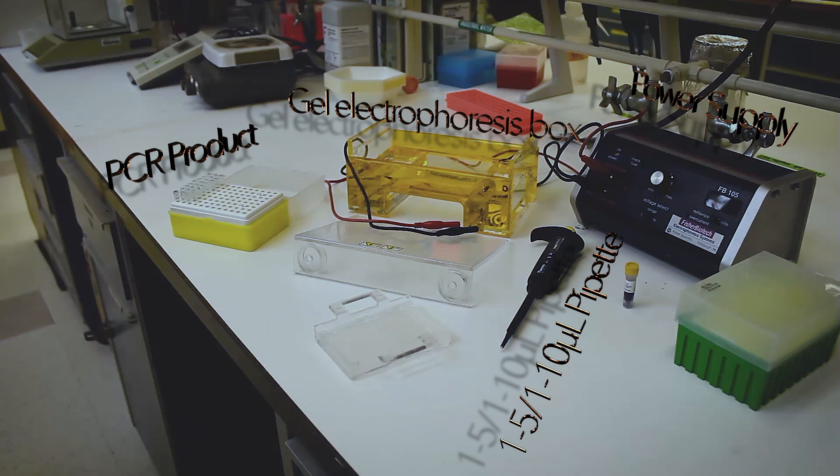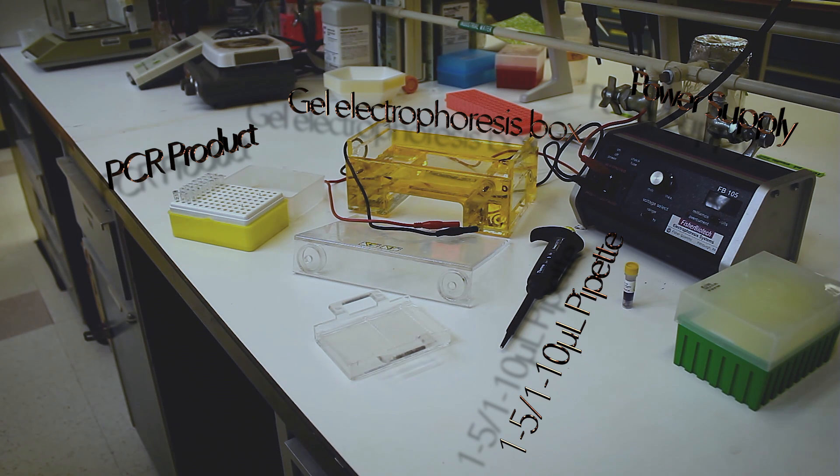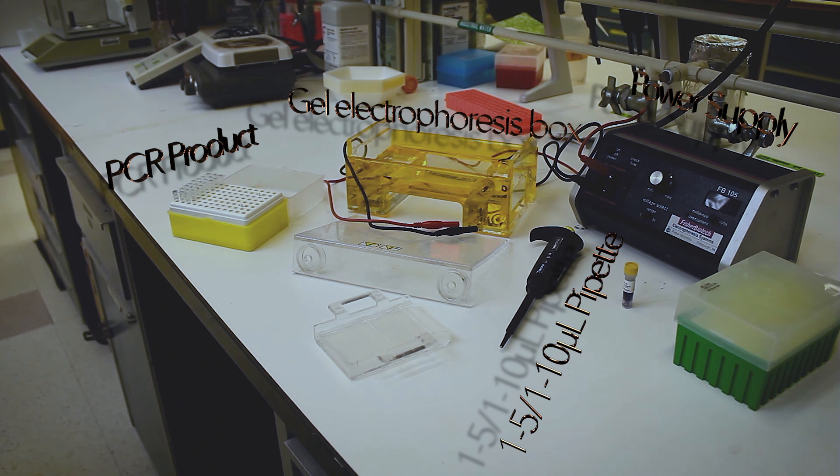To do this we will need PCR product, loading dye, DNA ladder, 1 to 5 or 1 to 10 microliter pipettes, TBE or a similar buffer, a gel electrophoresis box, an electrophoresis power supply, and an agarose gel.